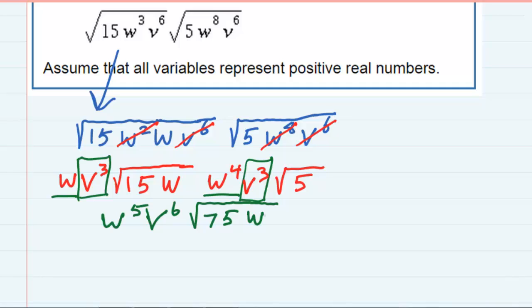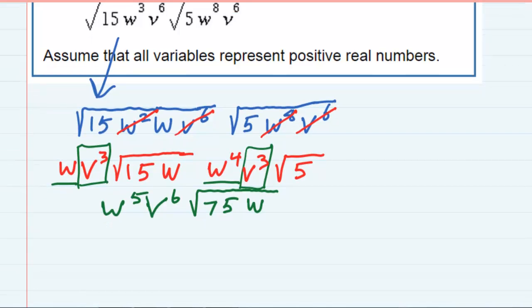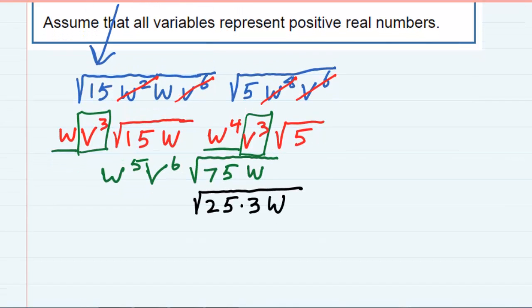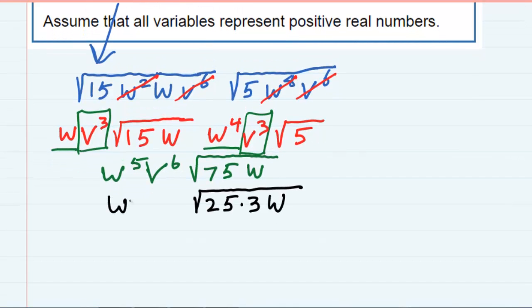So I've simplified and I've multiplied, but I want to check one more time to see if I can simplify that radical any further. And in this case, I can, because the 75 I can rewrite as 25 times 3. And I'm just going to bring everything else down, w to the fifth, v to the sixth.